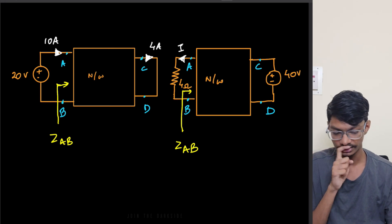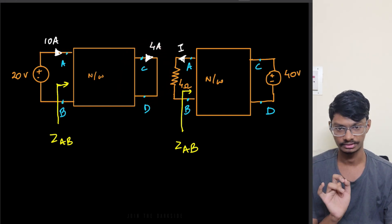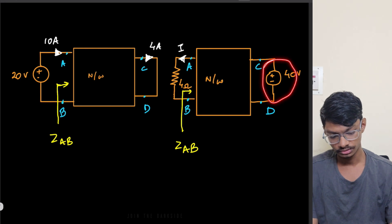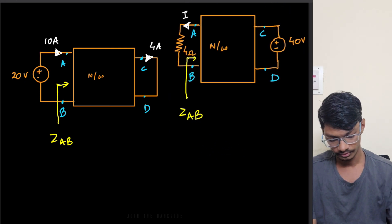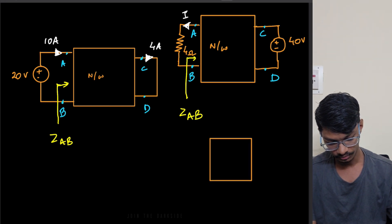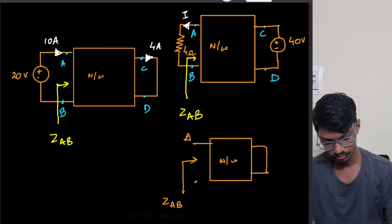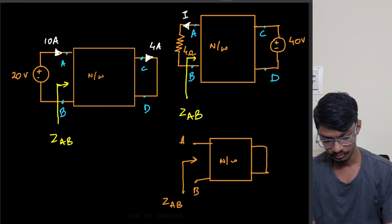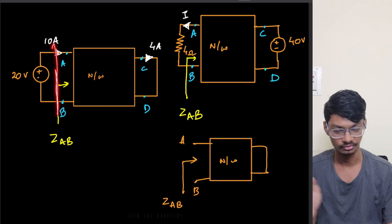The Thevenin impedance is the impedance between two points with all remaining independent sources made zero. So these sources will be made zero. What does this network get converted into? If I copy the network, we're finding the equivalent impedance Zab from here — this terminal is shorted, and this is the a-b terminal network.